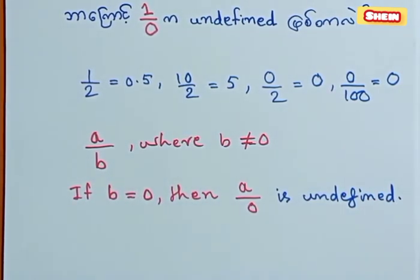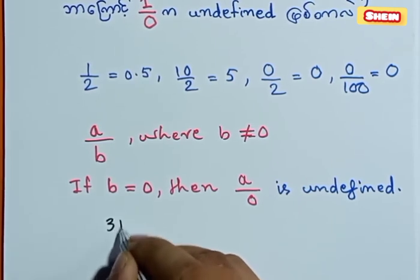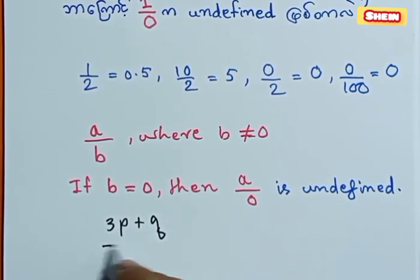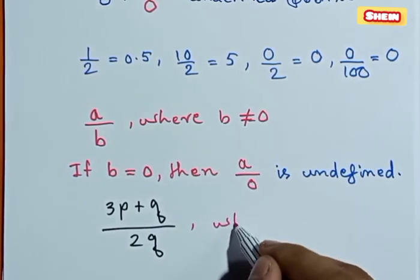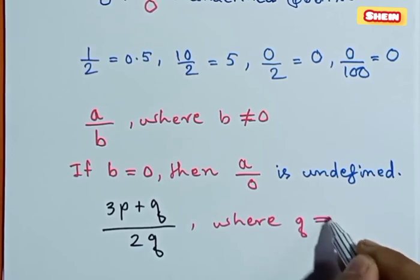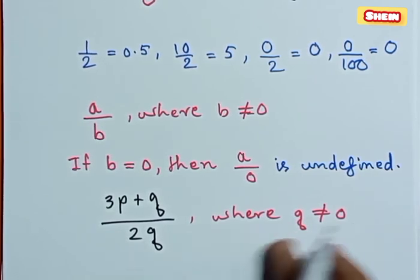Now let's take a look around and see what it looks like here. Let's take a look at the horizontal line, like 3B plus Q over 2Q. For example, we see that our previous step returns. However, if given a previous step, we see that the basis is 0 at that point.